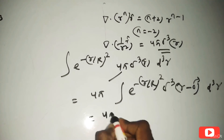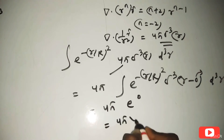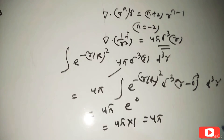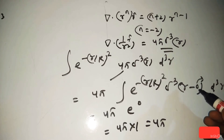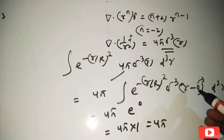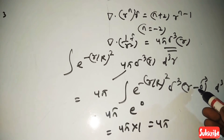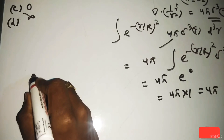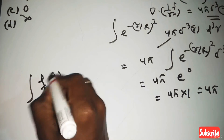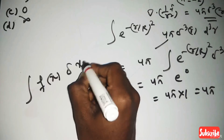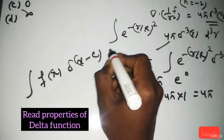So for π = e^0, that gives 4π × 1 = 4π. Using the delta function property — ∫ f(x) δ(x − c) dx = f(c) — with the delta function at the origin, the integral of e^(−r/r₀) with 4πδ³(r) evaluates to 4π × e^0 = 4π.